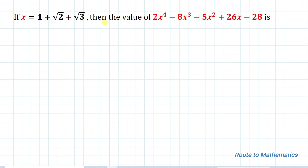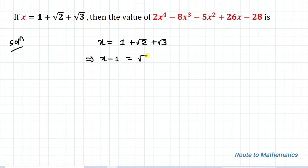We are given the value of x and asked to find the value of the given expression. So let's start the solution. We have x equals 1 plus root 2 plus root 3. In the next step, let's take the 1 to the left hand side, so we have x minus 1 equals root 2 plus root 3.